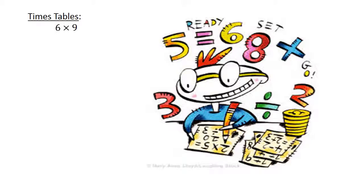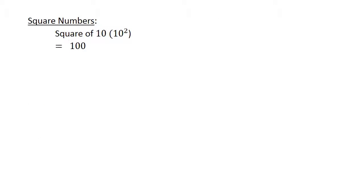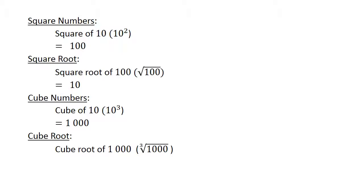Times tables: 6 times 9 equals 54, 11 times 6 equals 66. Addition: 45 plus 68 equals 113. Subtraction: 83 minus 47 equals 36. Division: 99 divided by 11 equals 9. Square numbers: the square of 10 equals 100, and the square root of 100 equals 10. Cube numbers: the cube of 10 equals 1000, and the cube root of 1000 equals 10.